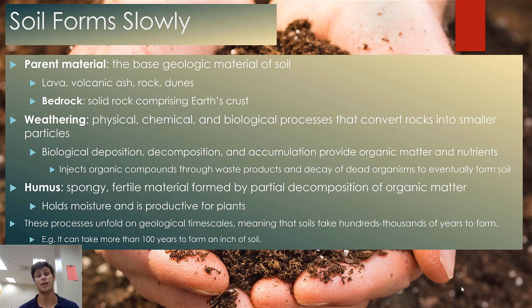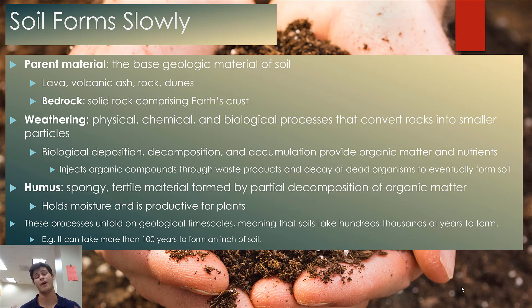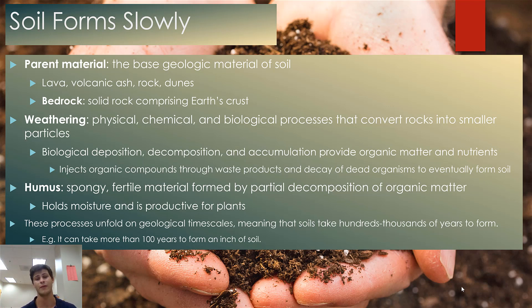As organic matter builds up as the soil continues to mature, something called humus begins to form. Humus is a spongy, fertile material primarily composed of large quantities of organic matter — mainly plant and some decaying animal matter — right on top of the soil. It's a rich source of organic matter and nutrients, as well as a reservoir for moisture for juvenile plants. Note: humus is NOT the chickpea-based dip from the store — that answer appears on exams as a joke. Humus is the spongy, fertile, organic material on top of the soil.